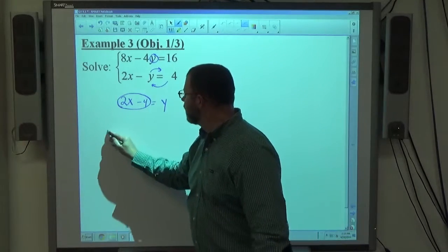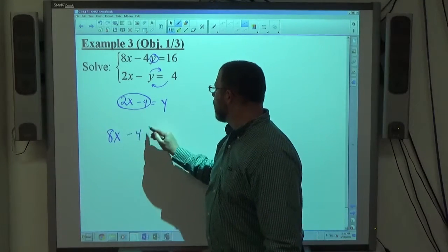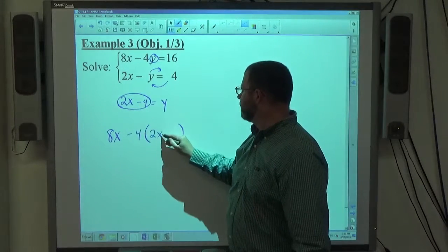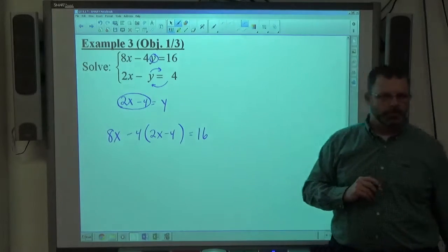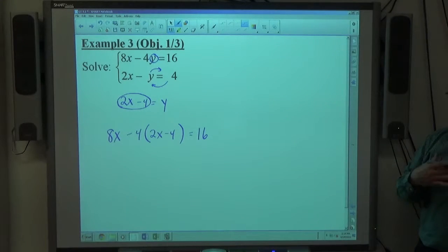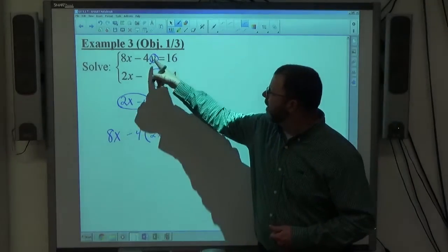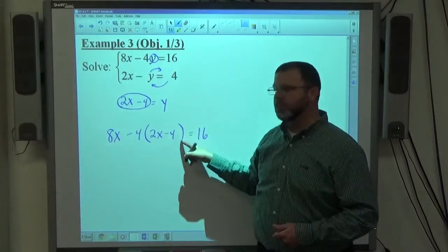So the top equation is 8x minus 4y, but instead of writing y, I'm going to write 2x minus 4, like so. Now if I go ahead and do a distributive property, simplify as much as possible, the substitution got y out of the problem, leaving it with an x expression. Everything is x now.